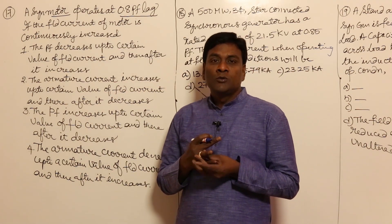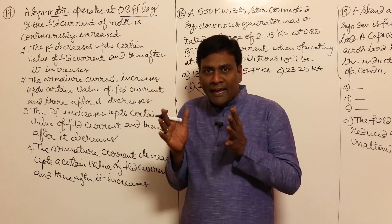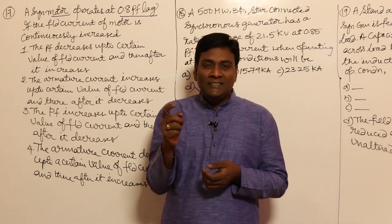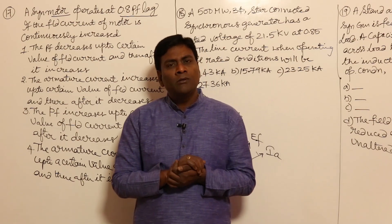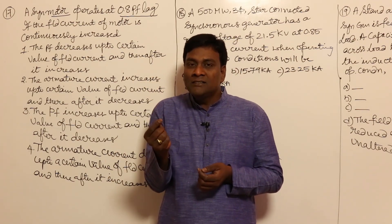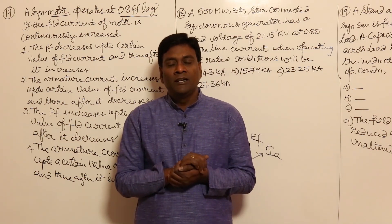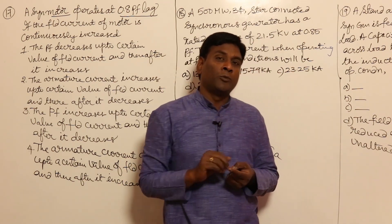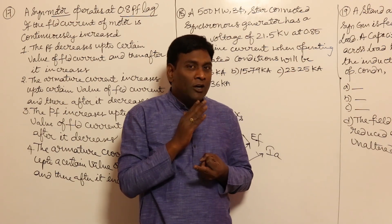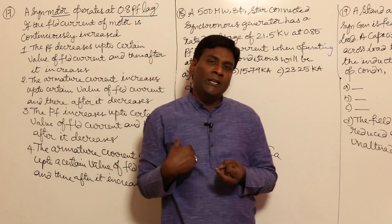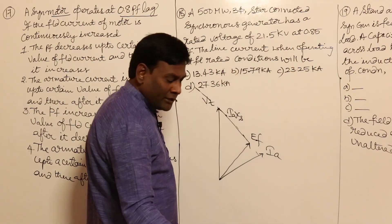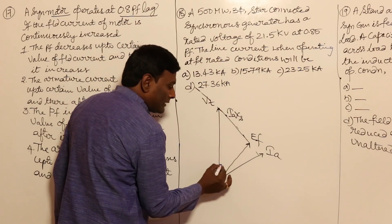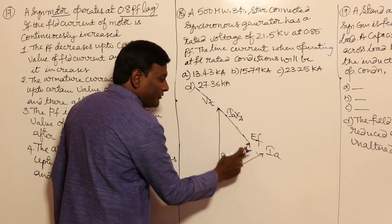Now, what is being varied? Field current. If you vary field current, there will be no variation in actual power. By varying field current — the DC source in the field — injecting more current will not deliver active power. Real power is mechanical power. So active power is constant, and reactive power may vary due to field current. Active power is Ef sin δ / Xs, so Ef sin δ is constant.